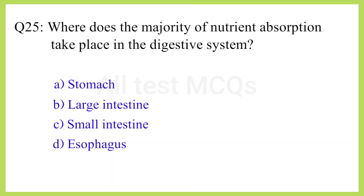Q25. Where does the majority of nutrient absorption take place in the digestive system? The correct answer is option C: Small intestine.